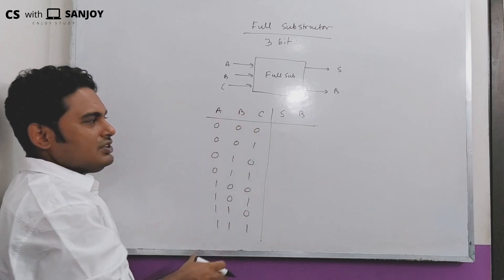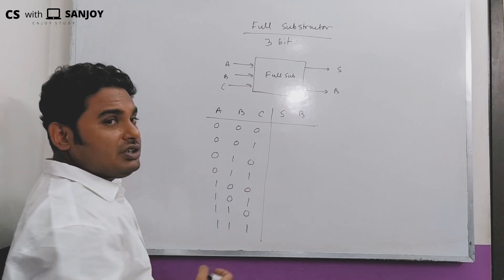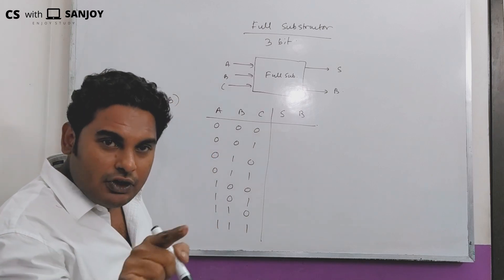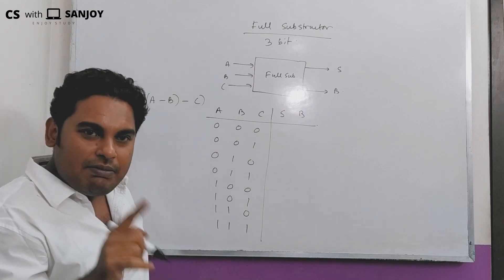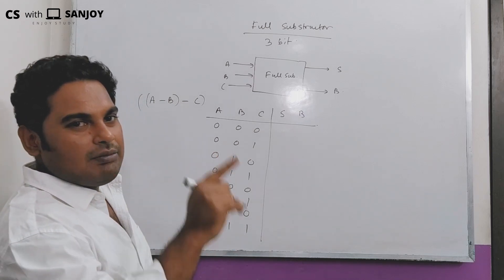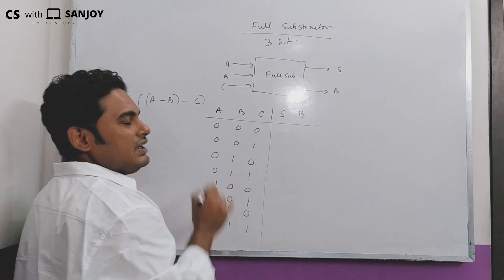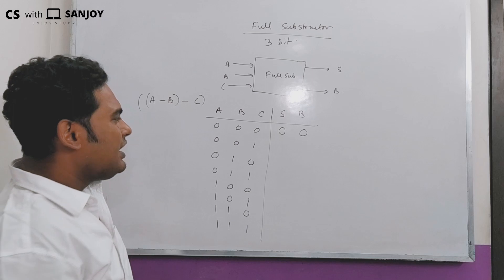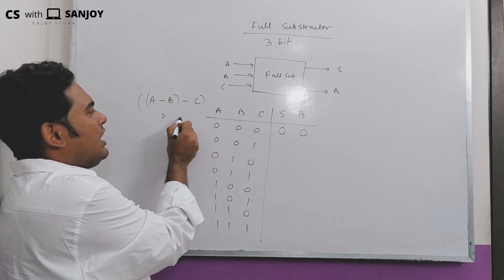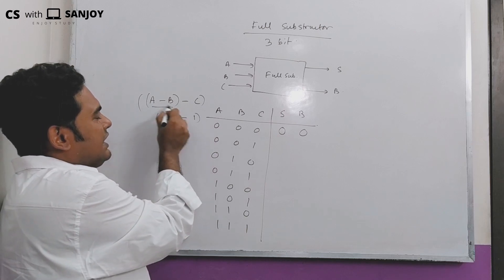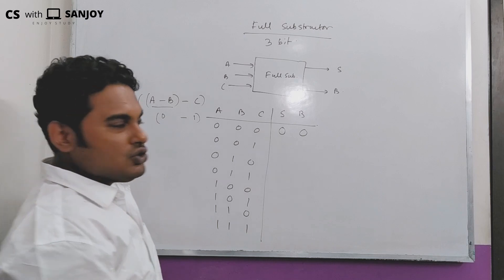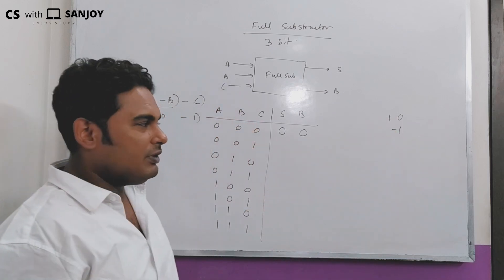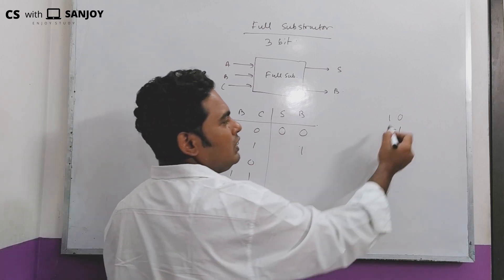The full subtraction means A minus B gives the full difference and borrow. So A minus B: when inputs are 0, 0, 0 — the result is 0, minus gives 0.